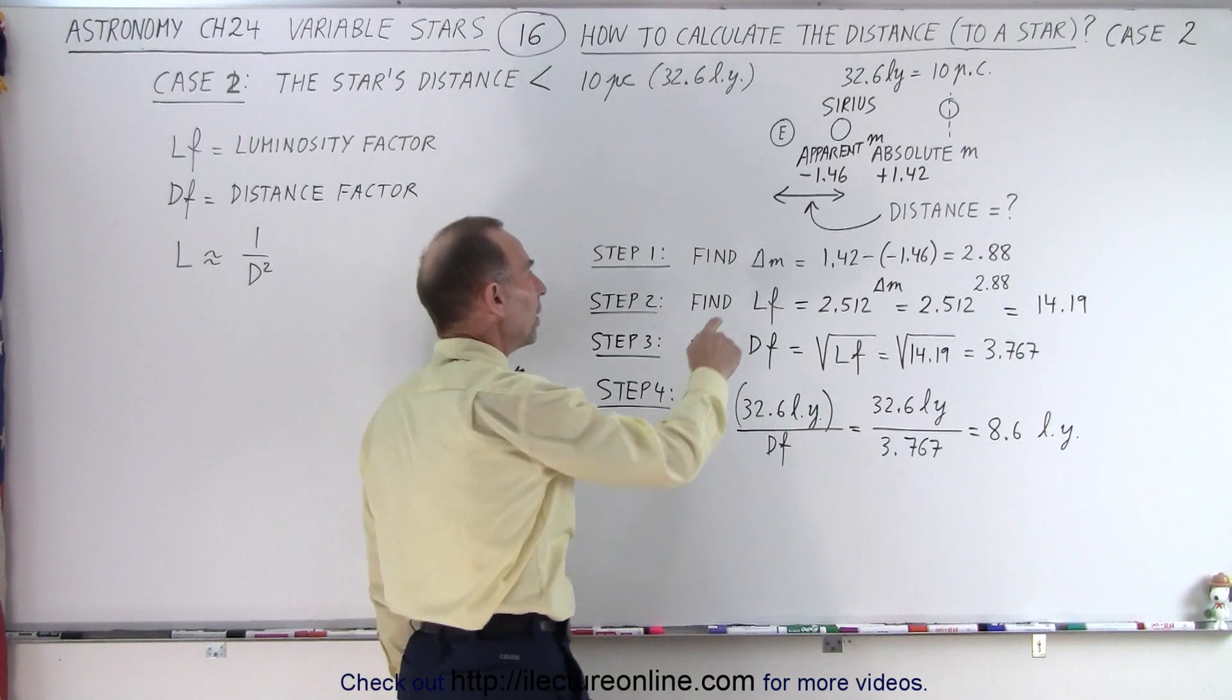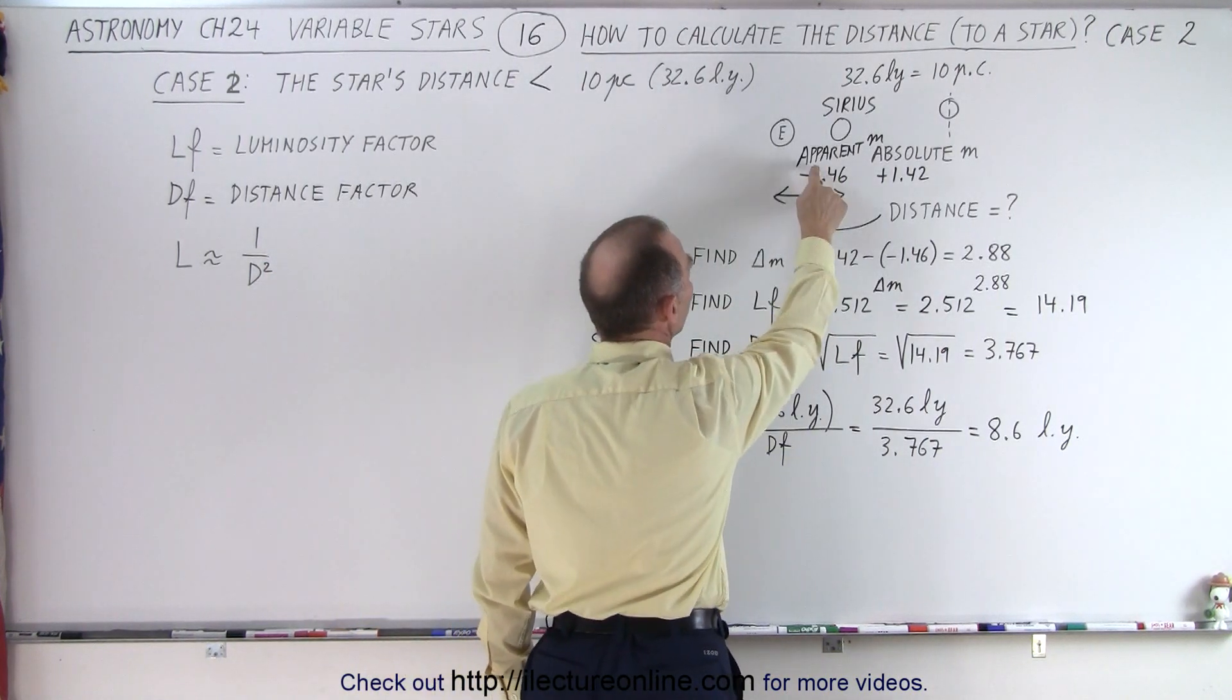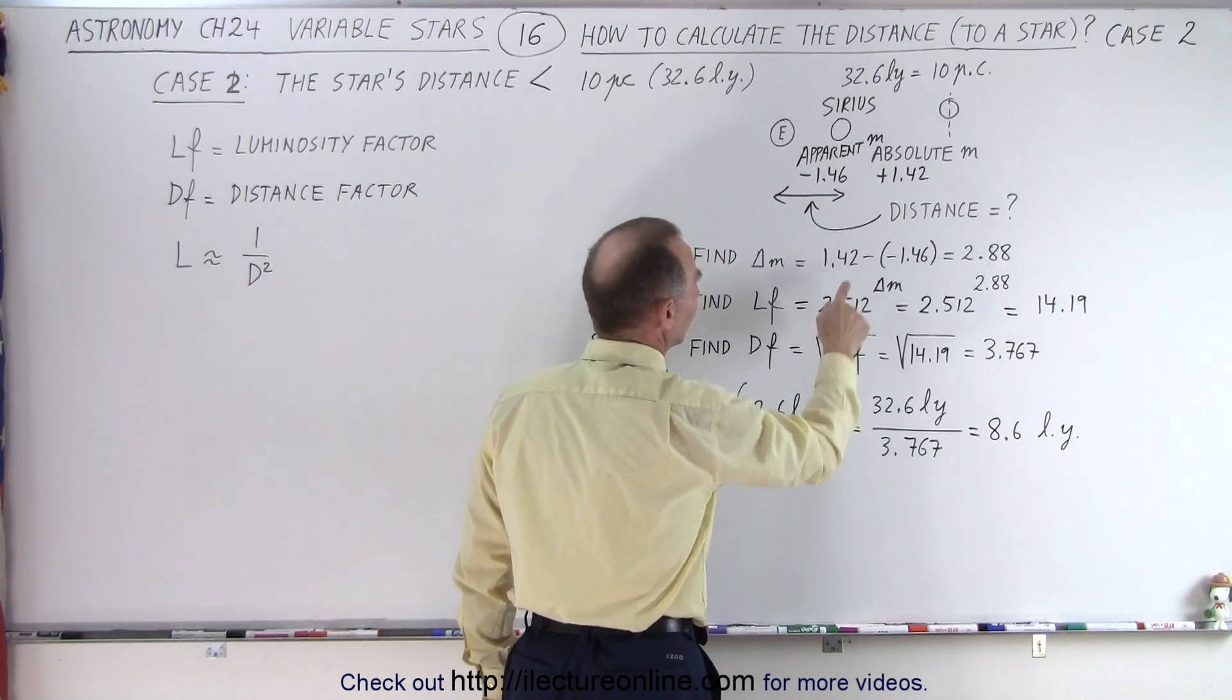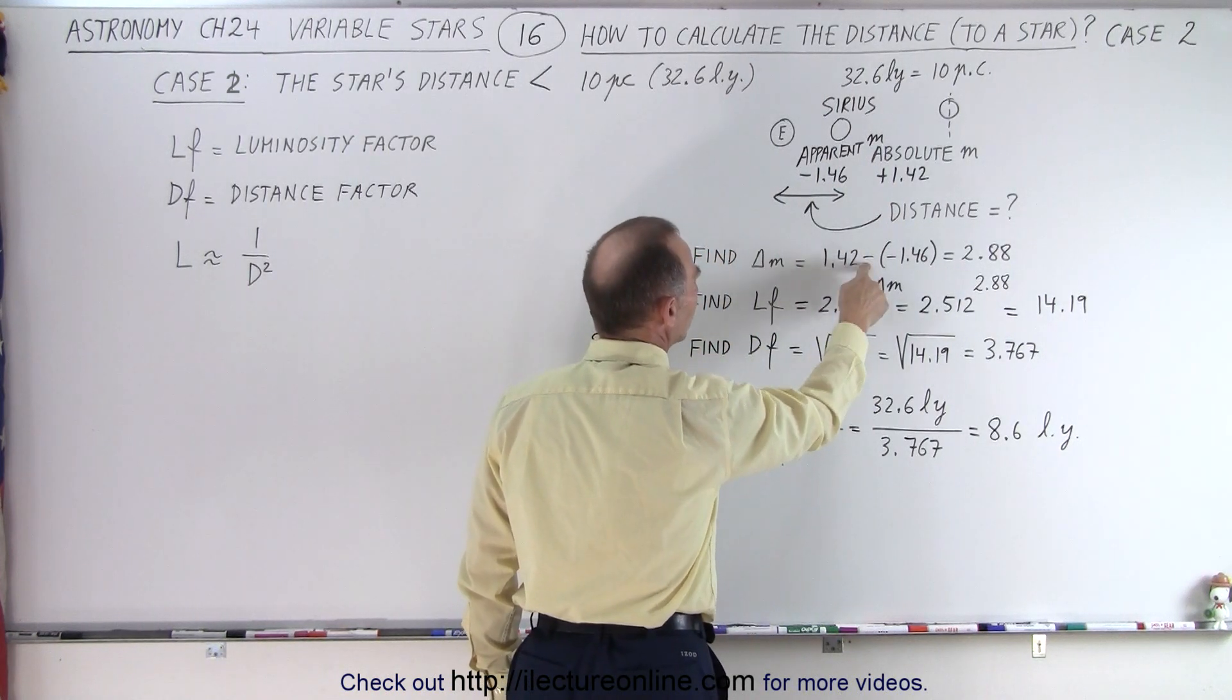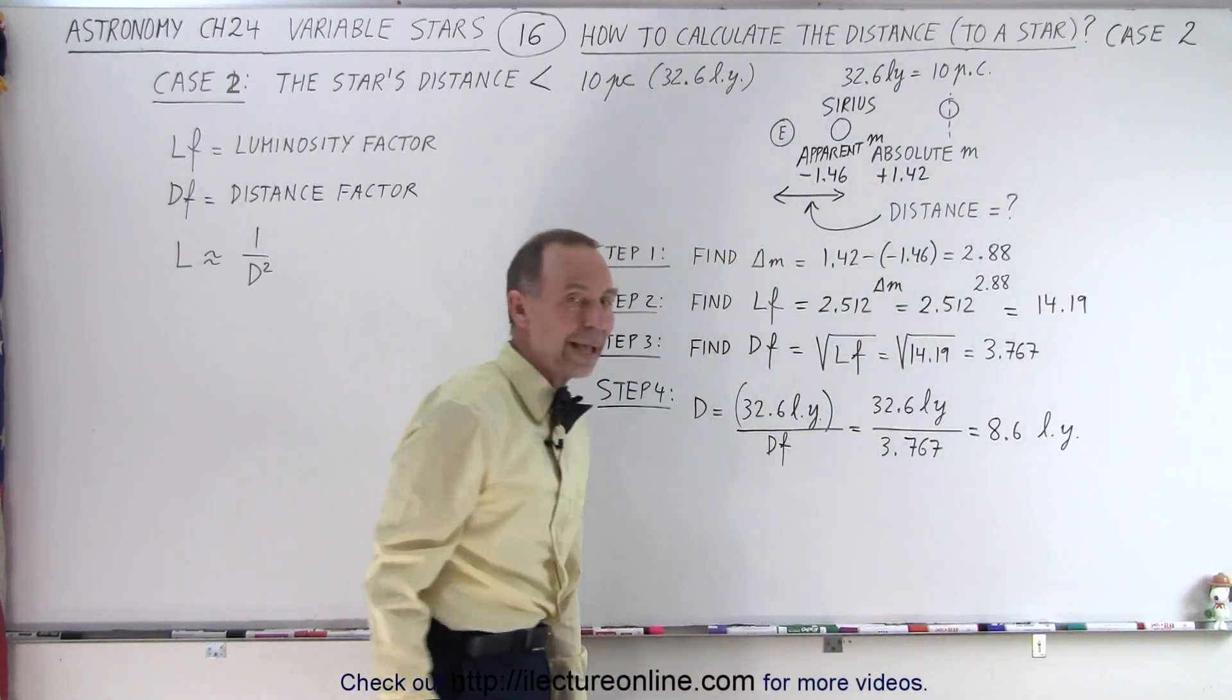For step one we're going to determine the difference in the magnitudes between the apparent and the absolute. So we take the absolute magnitude and subtract from that the apparent magnitude. The difference is 2.88 magnitudes.